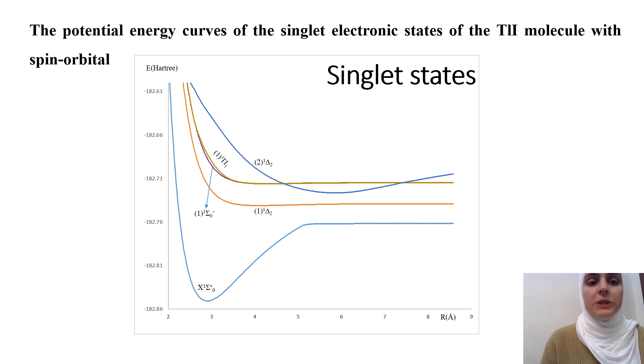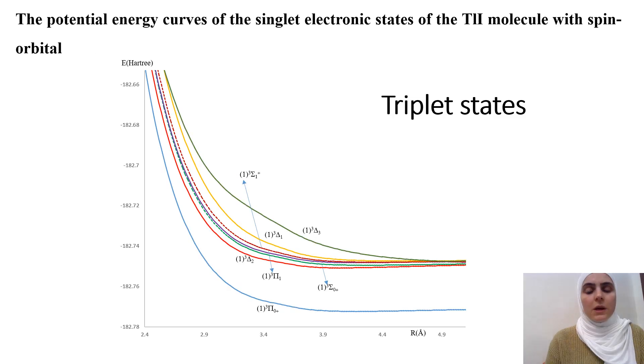This figure also represents the potential energy curve of the ground curves of the ground and excited states of the TLI molecule that correspond to angular momentum 0, 1 and 2 including here the spin orbit. In this slide and the coming slide of the singlet and triplet multiplicity, it's also clearly noticed that most of the potential energy curves are shallow with spin orbital consideration. Also here the potential energy curves corresponding to the triplet multiplicity.